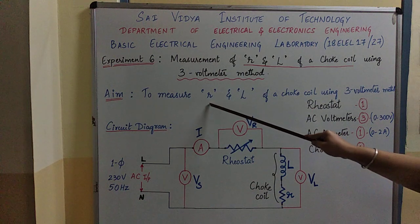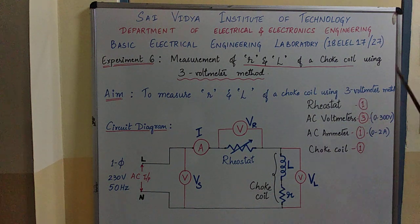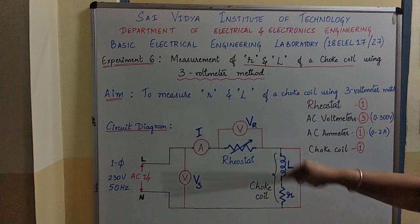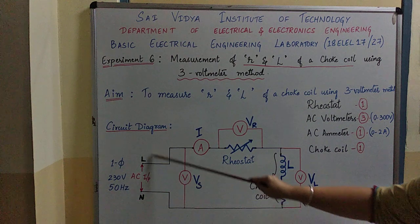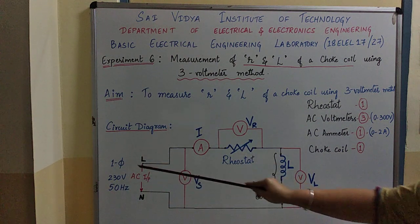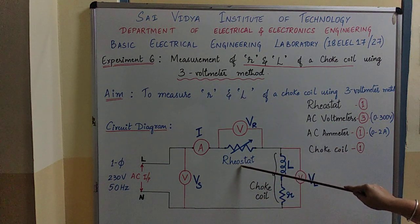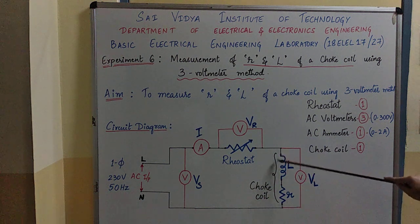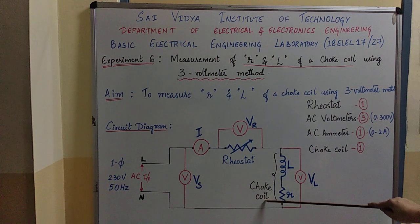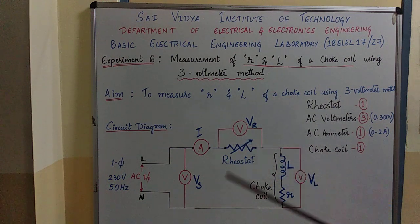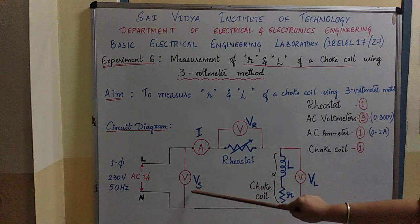As per the aim of the experiment, we have to learn how to measure the resistance and inductance of a choke coil using the 3 voltmeter method. In this circuit diagram, we have used apparatus like a single phase AC input supply — 230 volts, 50 Hz — then we have a rheostat, also called a variable resistor, and a choke coil, which is the complete L plus r in series. We are using AC voltmeters — 3 voltages are measured.